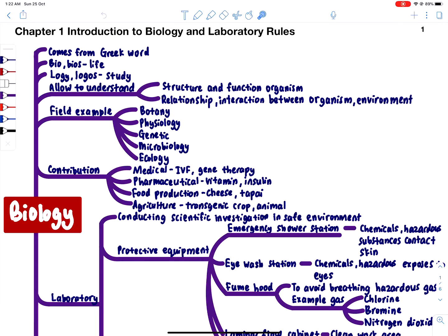We also try to understand the relationship and interaction between organisms. For example, prey and predator — mangsa dan pemangsa — and how the prey affects the population of the predator. Another aspect is how the environment affects the organism, and how changes in temperature or climate will also change the population. That's why biology is not a small subject — it is very in-depth.